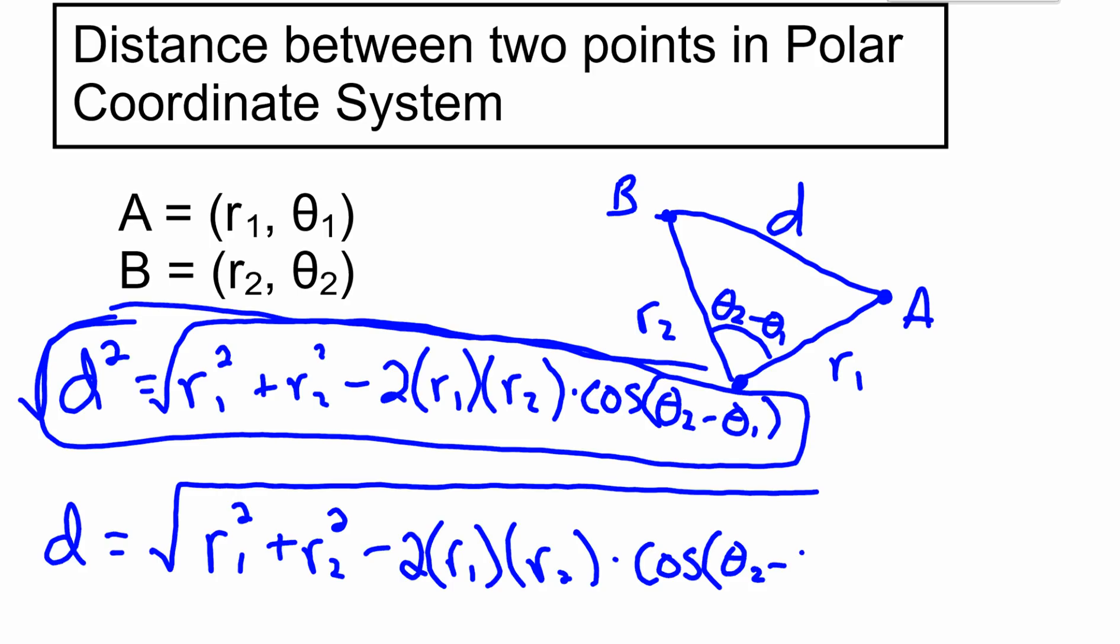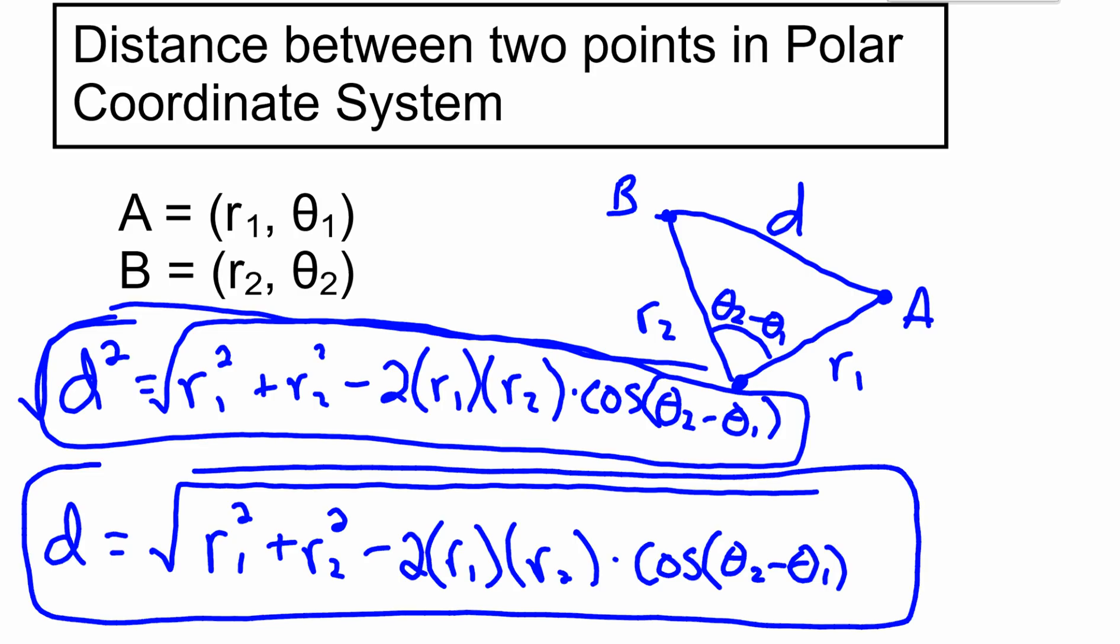So if I just threw this big, ugly formula at you and said this is the distance between two points in polar coordinates, you'd probably be like, holy smokes, that's pretty crazy. But remember, it's just the law of cosines. So we're just dealing with the law of cosines. And so if you know the law of cosines, that's all you've got to know. All right, so that's the distance between two points in a polar coordinate system.